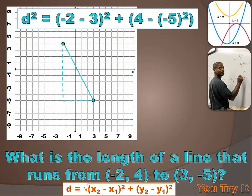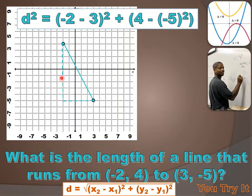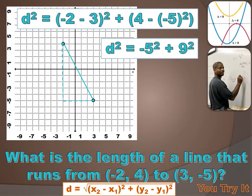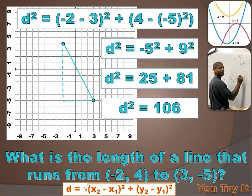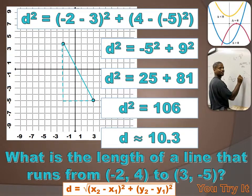d² is going to equal the difference in my x values. My x goes from -2 to +3, so 3 minus (-2) gives 5 — and counting confirms 5 spaces. My vertical motion is the change in my y value: my y goes from -5 to +4, that's 4 minus (-5), or 9 spaces. So d² = (-5)² + 9² = 25 + 81 = 106. The square root of 106 is approximately 10.3.